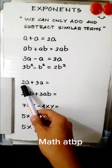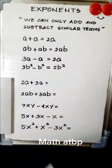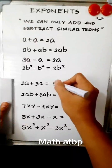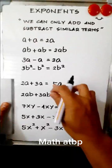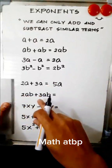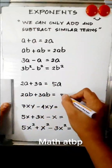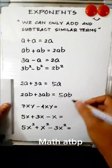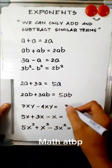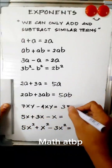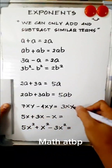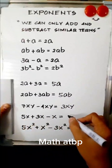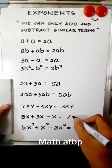Now we have 2a plus 3a — that is 5a. 2ab plus 3ab — that is 5ab. 7xy minus 4xy — that is 3xy. 5x plus 3x minus x — the answer is 7x.